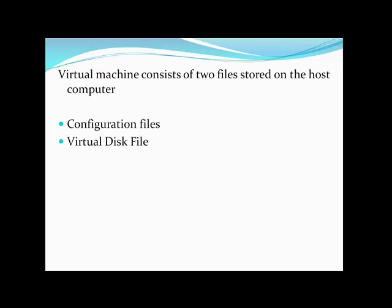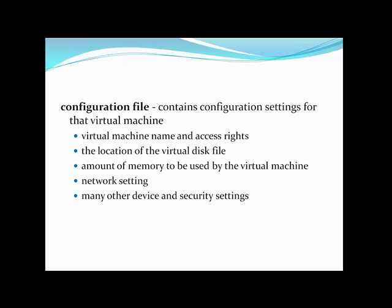A virtual machine consists of two sets of files stored on the host computer: the configuration files and the virtual disk file. A configuration file contains the configuration settings for that virtual machine. These settings include the virtual machine name and access rights, the location of the virtual disk file, the amount of memory to be used, how much RAM on the host machine will be allocated, the network settings, and many other device and security settings.